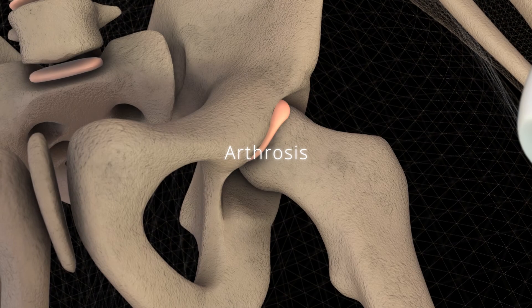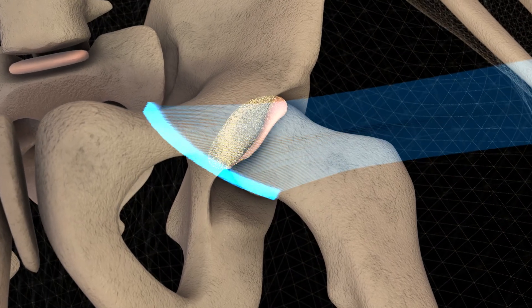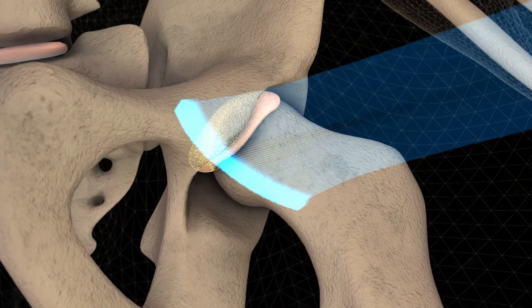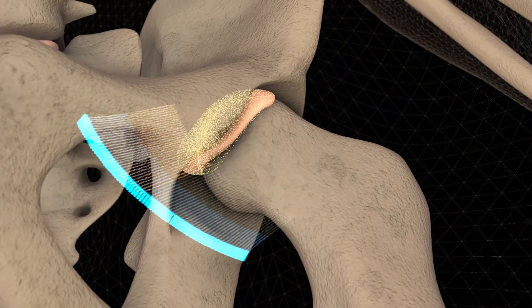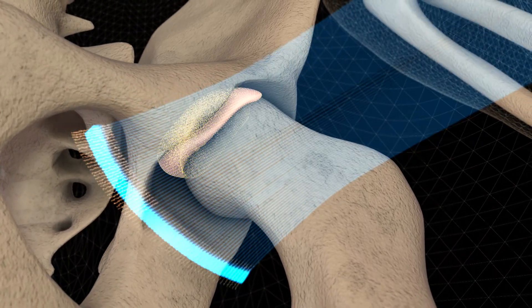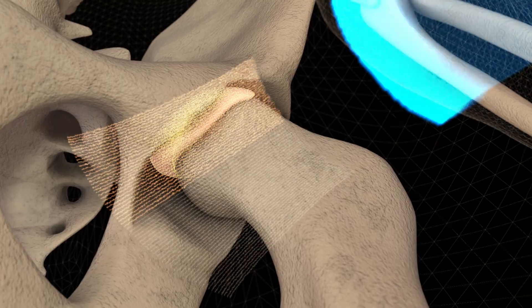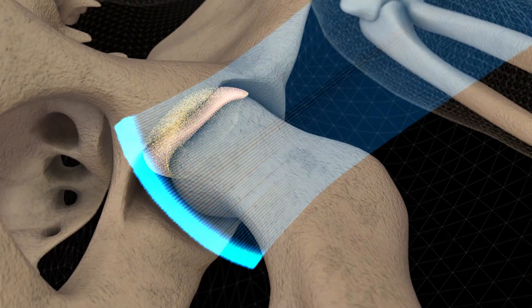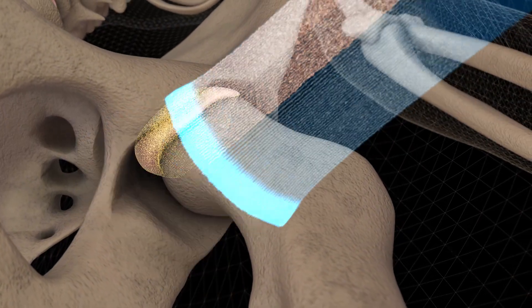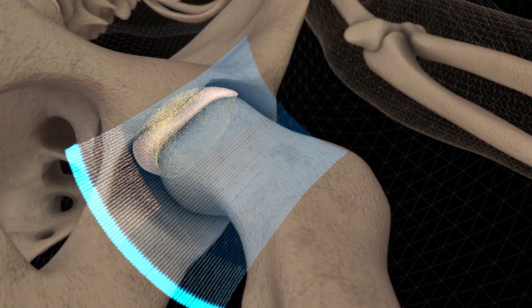REMS, thanks to ongoing developments, will make it possible to investigate other musculoskeletal tissues, like cartilage, in order to monitor the onset and evolution of diseases like arthritis.